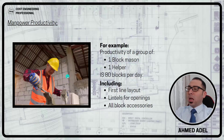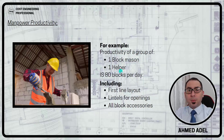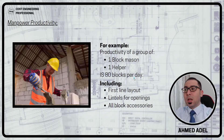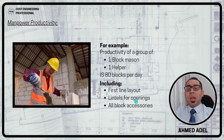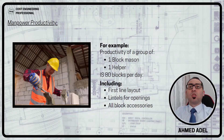For example, if we are talking about block work installation, the productivity of a crew of one block mason and one helper is about 80 blocks per day — they can install or fix 80 blocks per day. This includes the first line of the block wall, the lintels for openings, and fixing all the block accessories. So fixing 80 blocks including all associated required works — this is the productivity.